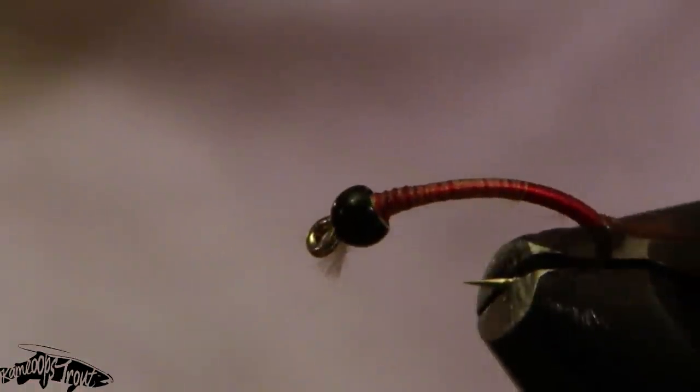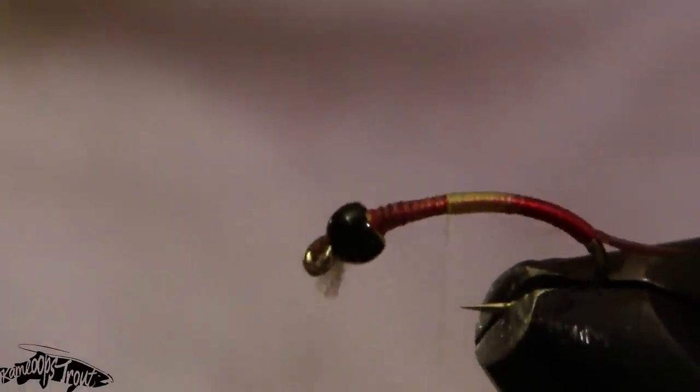Now we're tying in some fluorescent yellow thread. We're just going to go back past halfway on this fly, so if you go just past that hook point, a little ways past halfway of the full length of the hook.